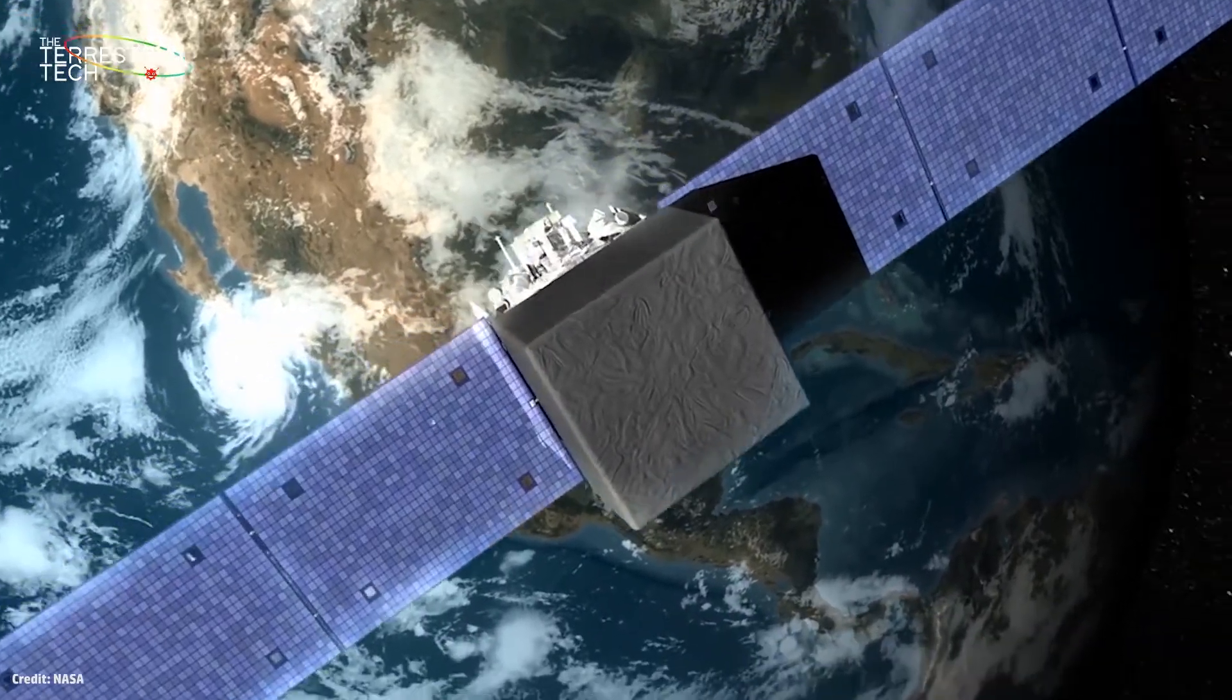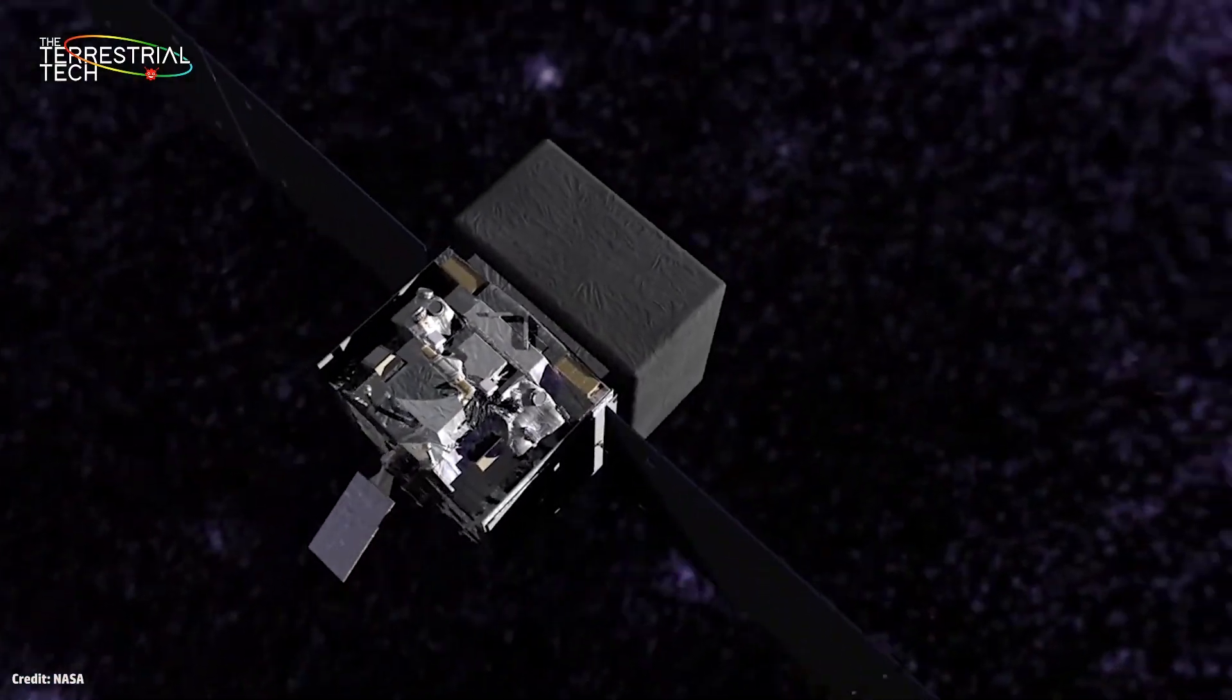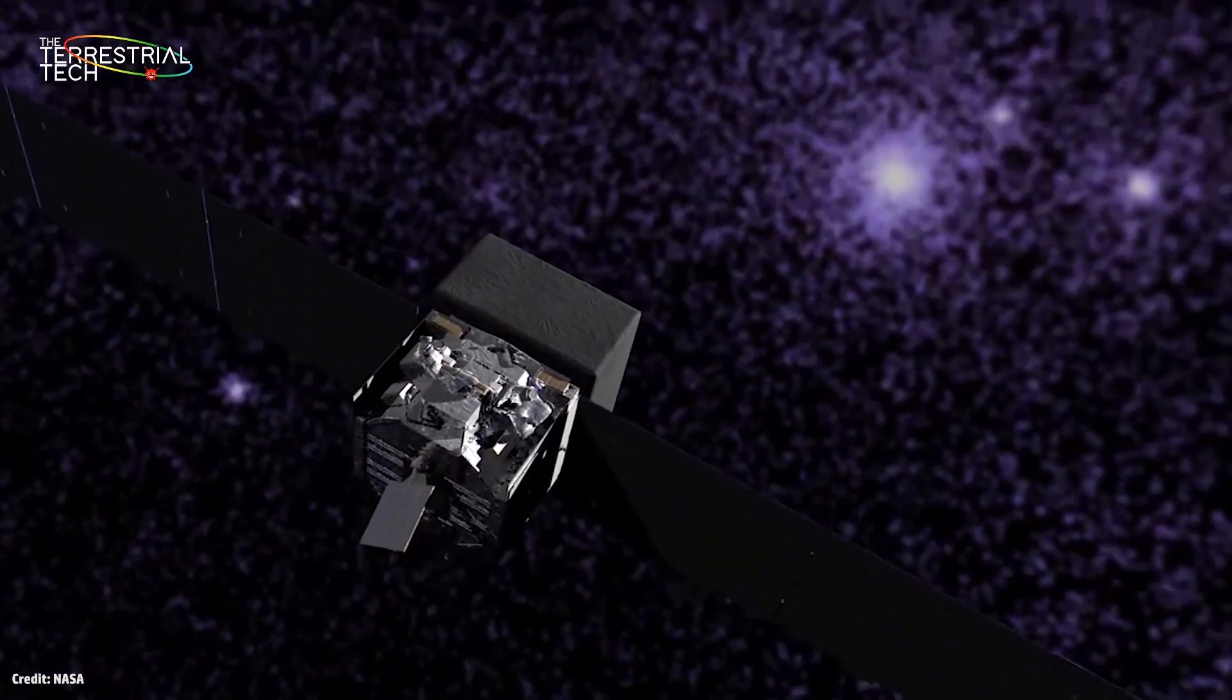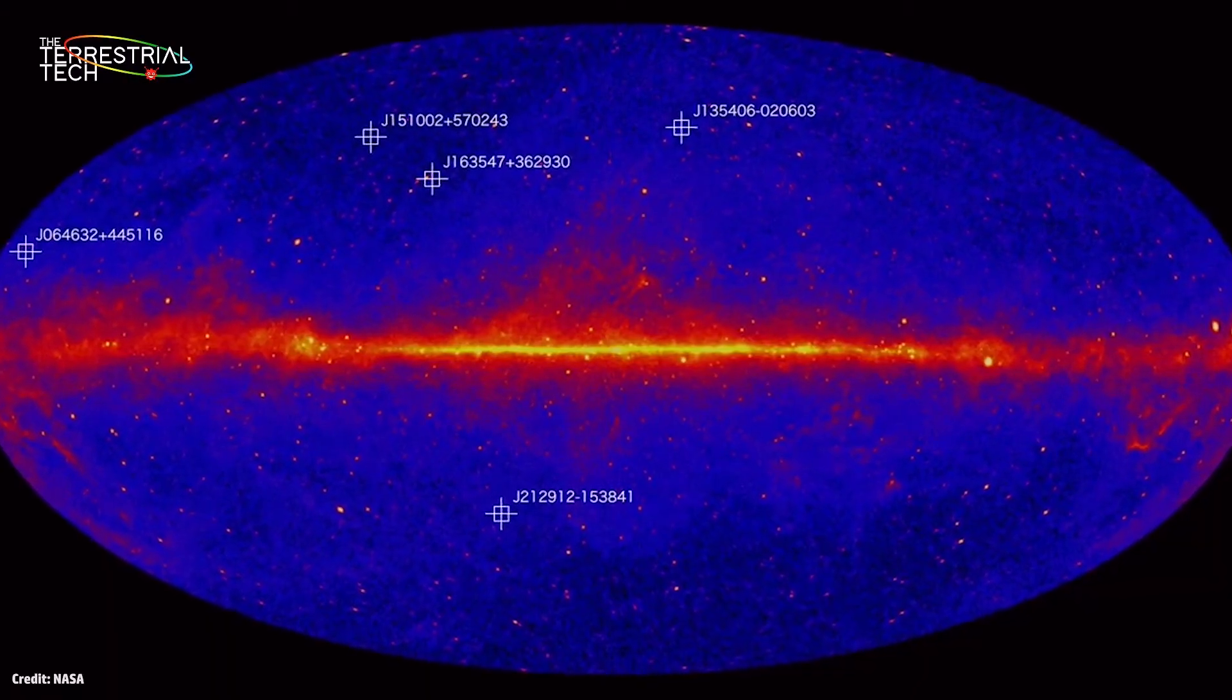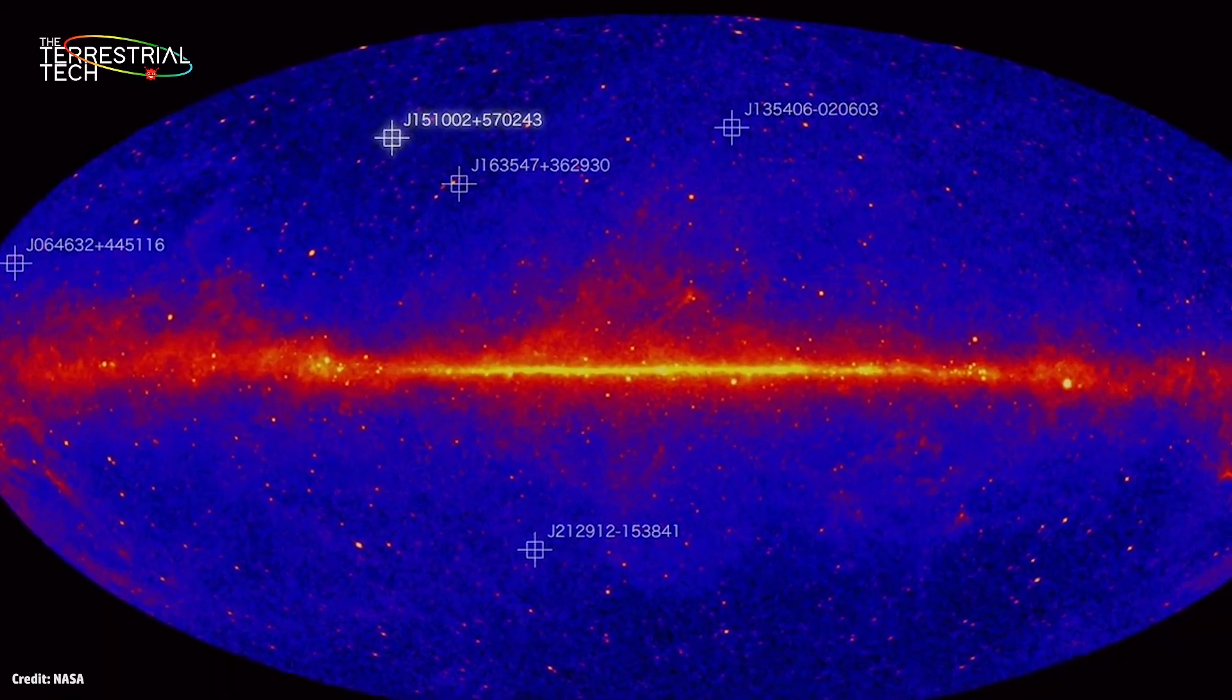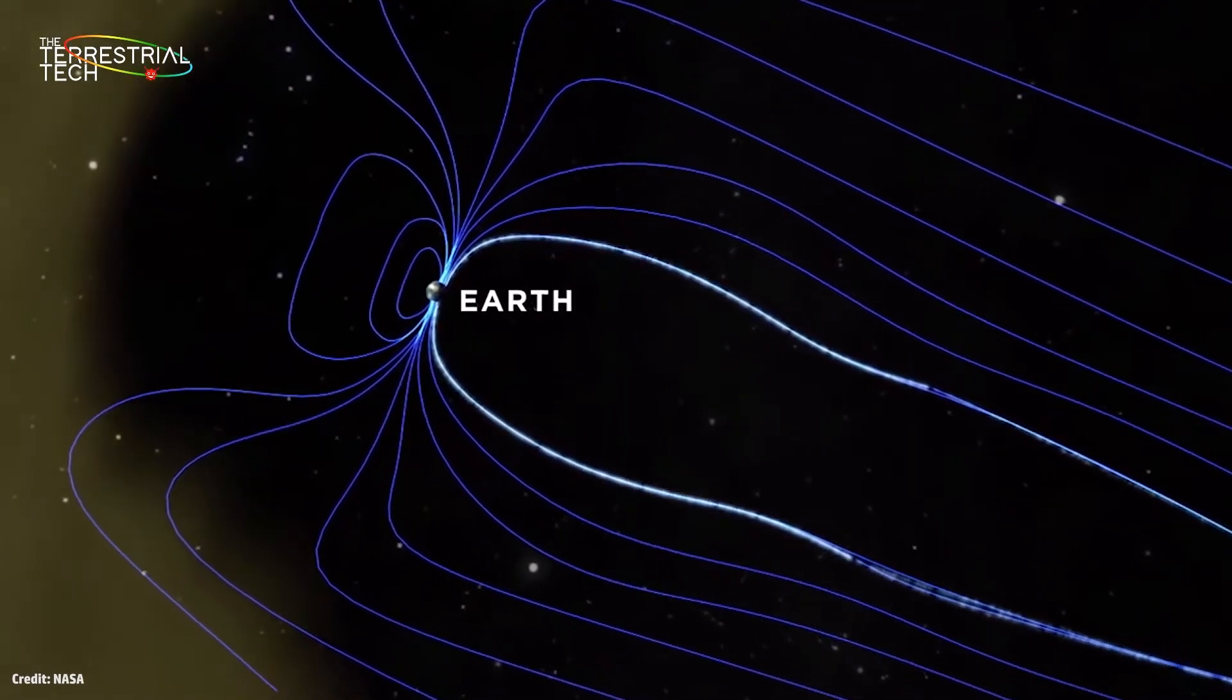And since then, we have been using new technologies to study these blazars. One of them is the Fermi Gamma Ray Space Telescope, which we established in Earth's orbit that helped astronomers in detecting high-energy x-rays and gamma rays, which normally get blocked by the Earth's atmosphere.